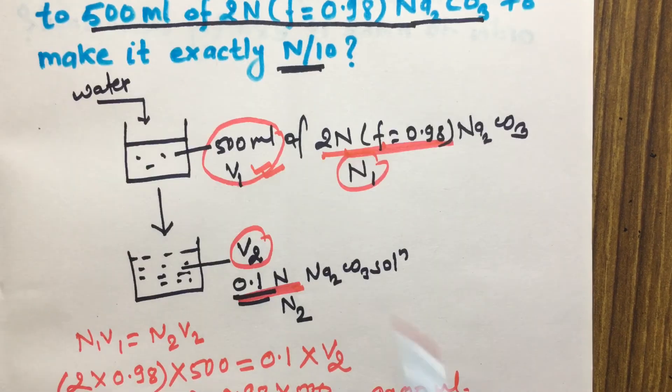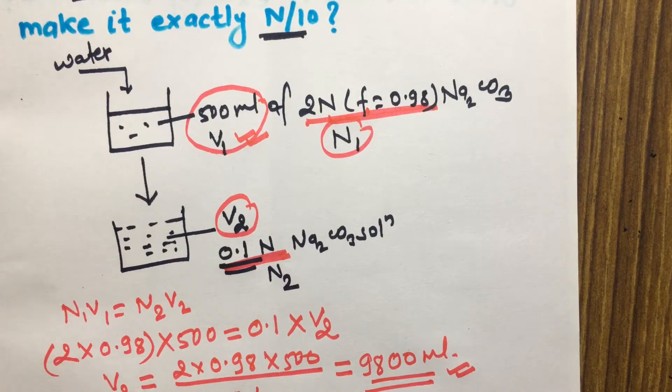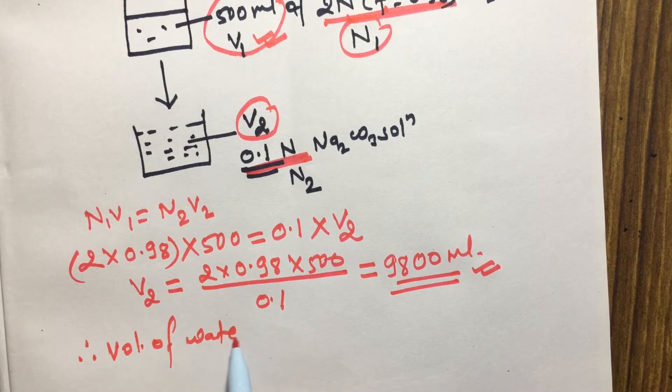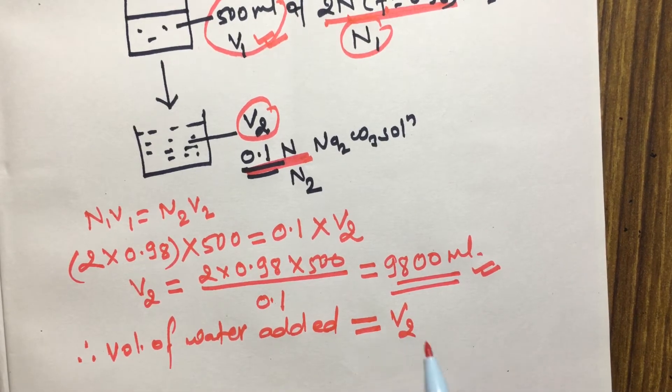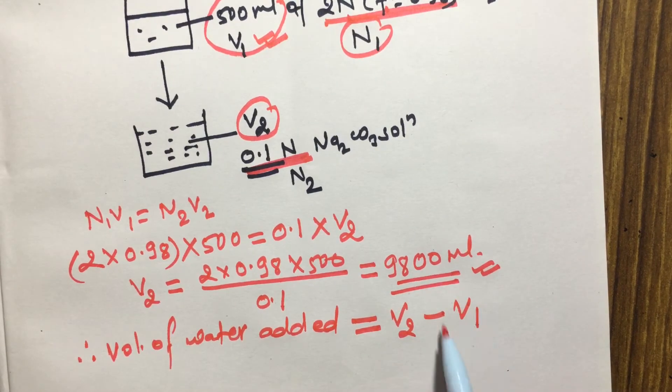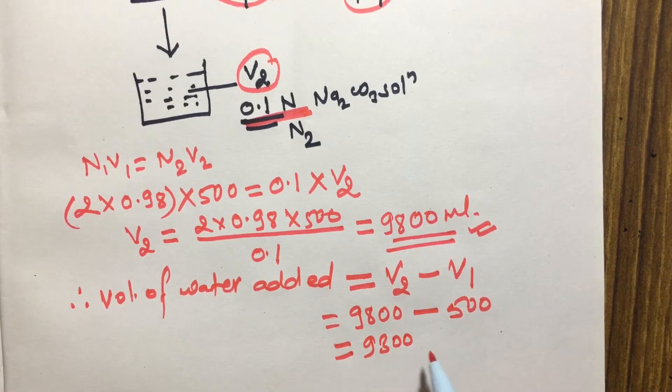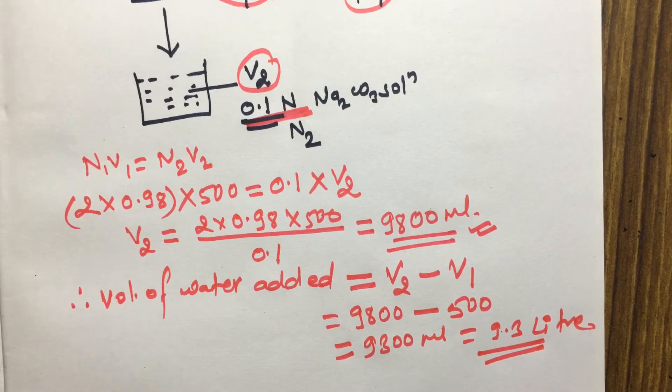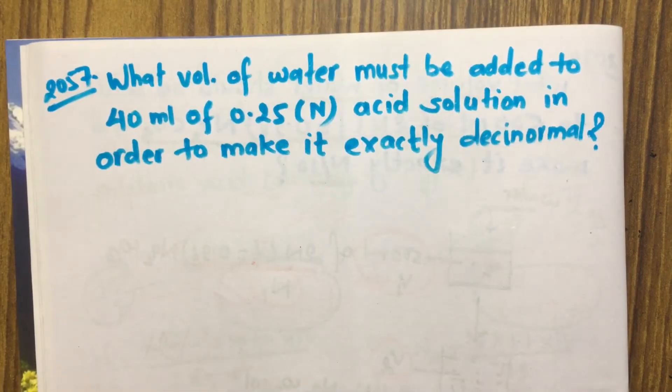After adding water, 500 ml solution becomes 9800 ml solution. This is the initial volume of solution and V₂ is the final volume of solution. Therefore, volume of water added equals V₂ minus V₁, the initial volume of the solution, that is 9800 minus 500 equals 9300 ml, and this is 9.3 liters. So this much water should be added to make the concentration N₁ to N₂. Let's see a similar type of question.